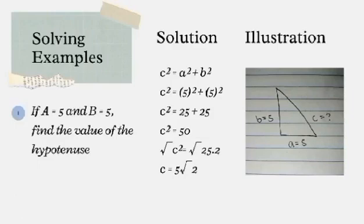This is Example 1 of the Pythagorean Theorem. If A is equal to 5 and B is equal to 5, find the value of the hypotenuse. We use the formula: C squared is equal to A squared plus B squared. C squared is equal to 5 squared plus 5 squared, since the values of A and B are both 5. Then C squared is equal to 25 plus 25, because 5 multiplied by itself is 25.